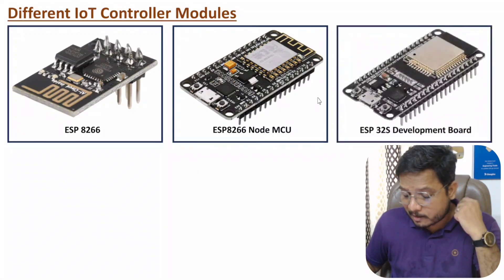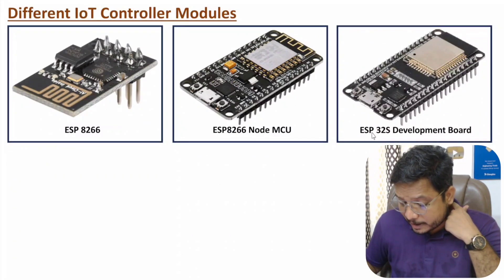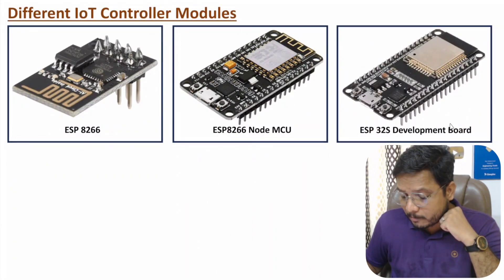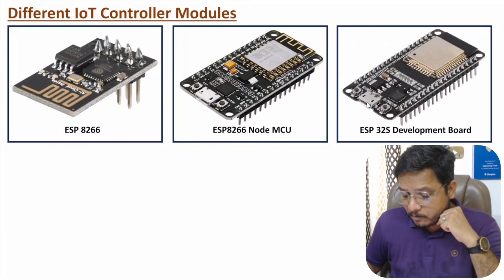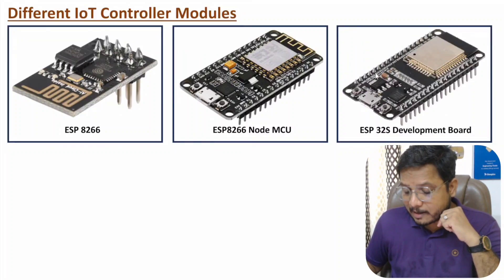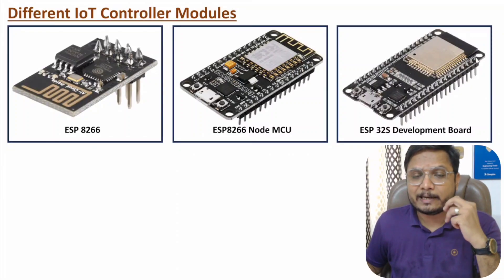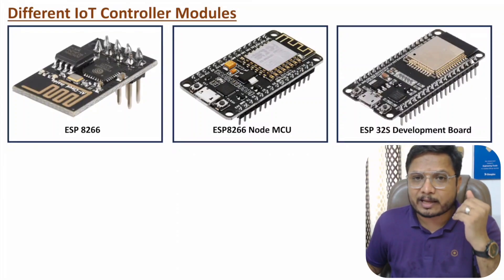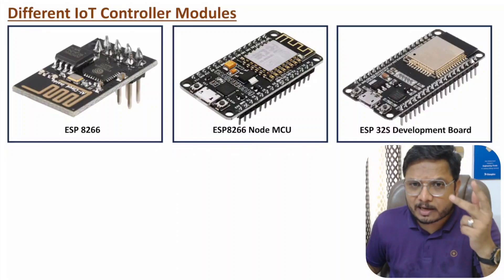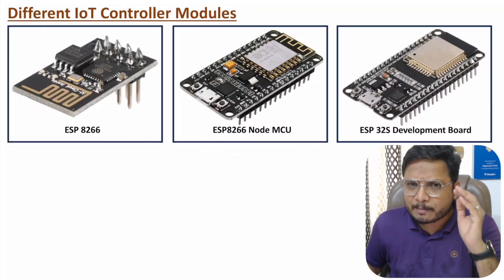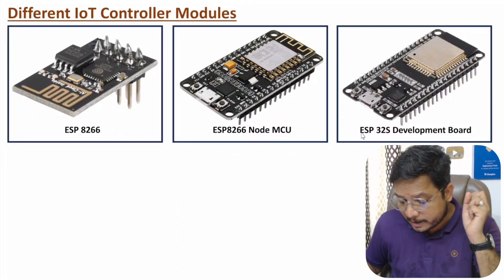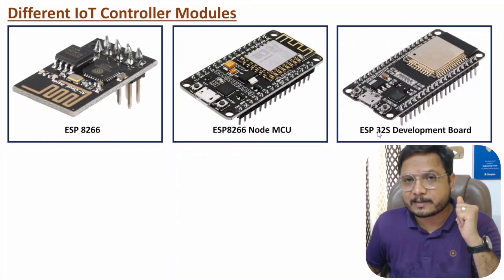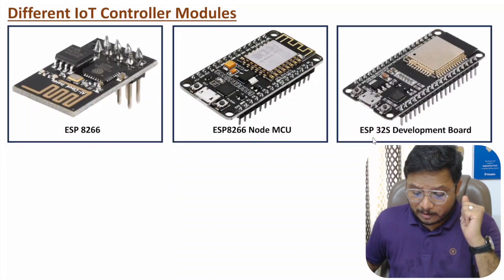After that, we have the third module — the ESP32-S development board. With this board, we have a USB interface by which one can program it, and we have a higher number of IO pins by which one can interface input and output devices. In future videos, I'll be making many projects using ESP32 in this video lecture series.